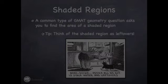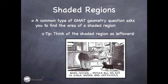You've probably seen questions like this if you've done any practice questions yet. Certainly a common type of GMAT geometry question asks you to find the area of a shaded region. And here's my tip for you. The best way to find the area of a shaded region is to essentially subtract out what is calculable and whatever's left over is that shaded region. In other words, you want to think about shaded regions on the GMAT as leftovers.